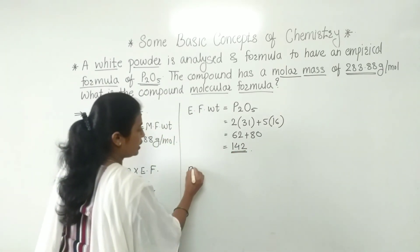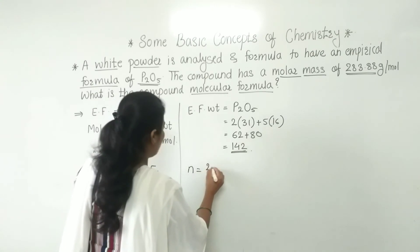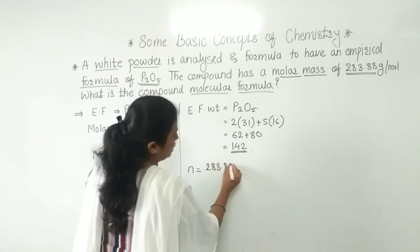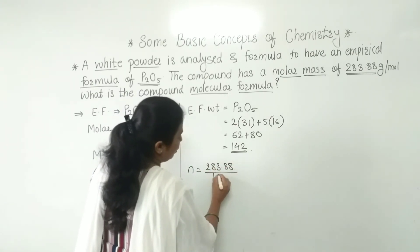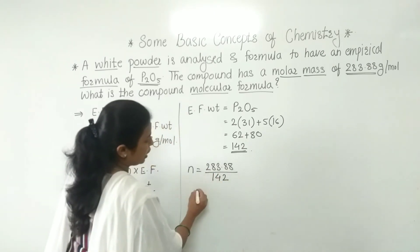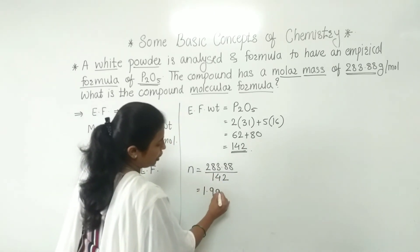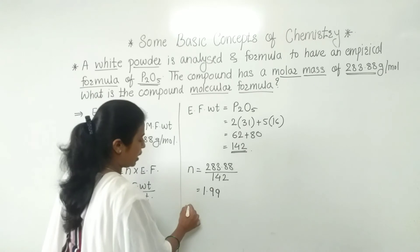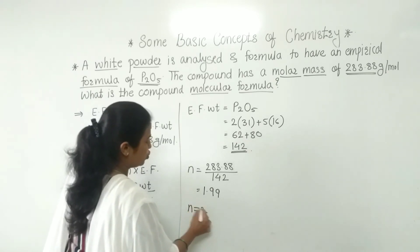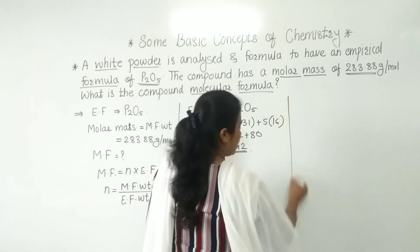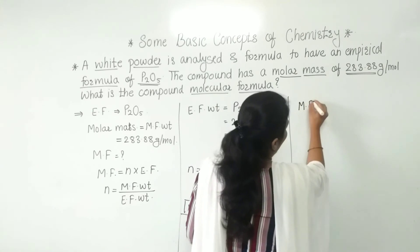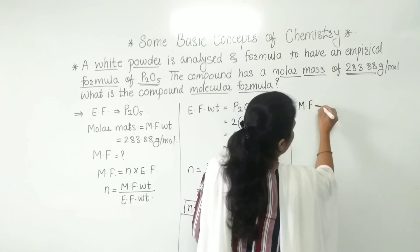Now n = 283.88 divided by 142. If we calculate this we get 1.99, which is approximately 2. So n = 2.